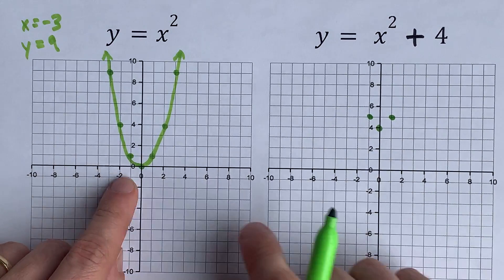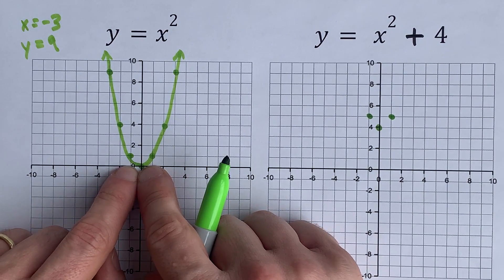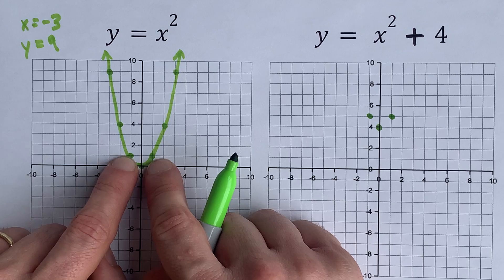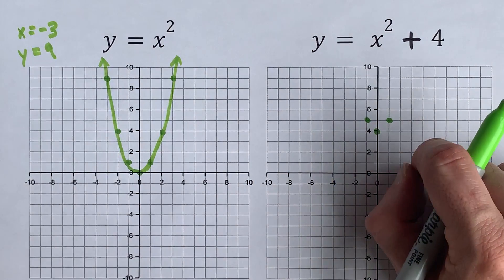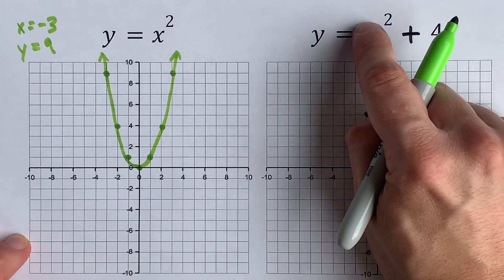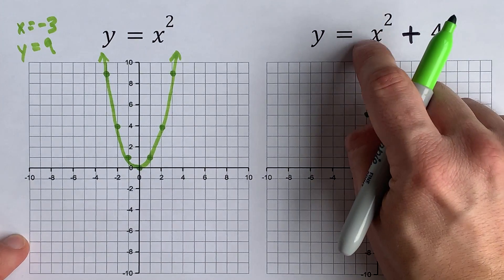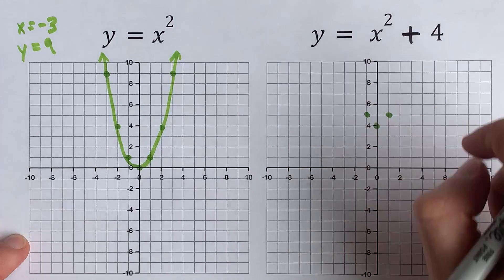Look how the arrangement is the same. From here, I go over 1 and up 1 in either direction. You wouldn't be allowed to do that if there was a stretch of some kind, but there isn't. All that's happening here is a shift.